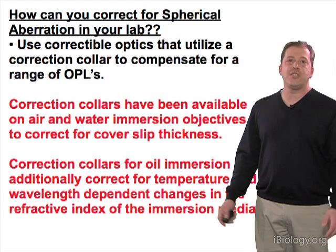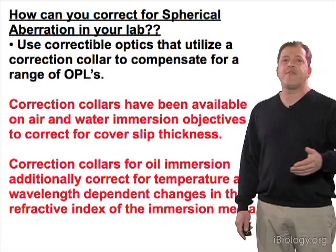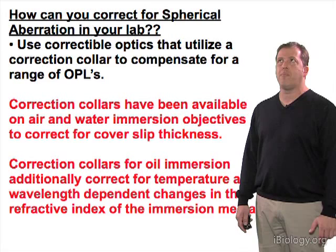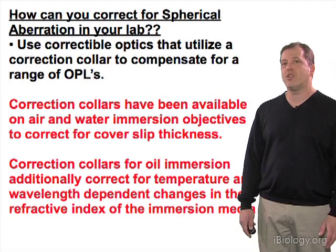Ideally, you'll use a lens with a correction collar, which is really the easiest way to correct for spherical aberration. There are limits, so you have to understand if you're outside the range that can be corrected. A correction collar, traditionally available for cover slip thickness adjustment in air and water immersion lenses, is now also available in oil immersion lenses.